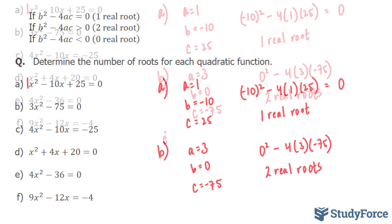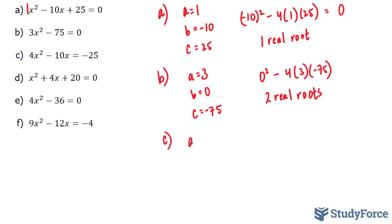Let's move on to c. In c, our a value is 4, our b value is negative 10, and our c value is positive 25. Notice that our c value is not on the same side as all the other terms, so we would have to bring this over, and therefore it's positive 25.